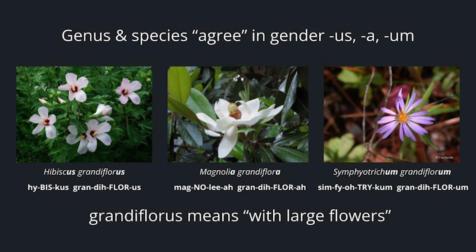Genus and species agree in gender. Here we have grandiflorus, meaning with large flowers. If it's Hibiscus, it's grandiflorus. Magnolia becomes grandiflora. Or Symphyotrichum becomes grandiflorum. Even though these all have different endings, they all mean with large flowers — and this is typically in relation to other plants in the genus. You can easily see that the aster flower is nowhere near as large as the magnolia flower. However, for an aster, that is a distinctive characteristic. Symphyotrichum grandiflorum is also notable as a species native just to the Piedmont.